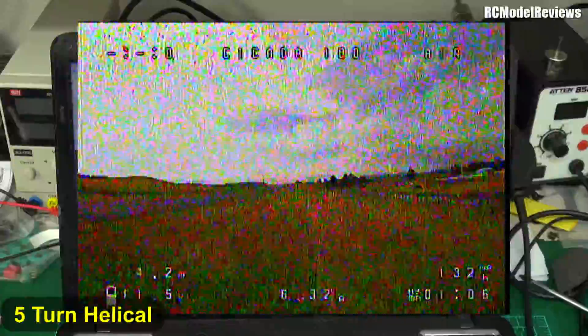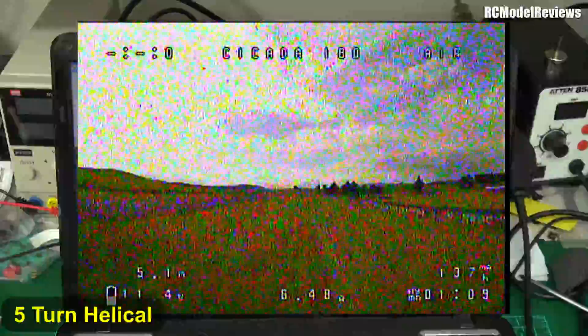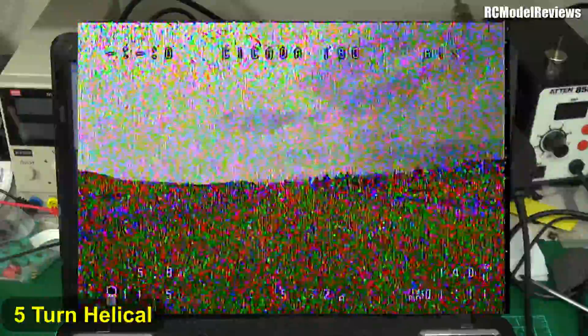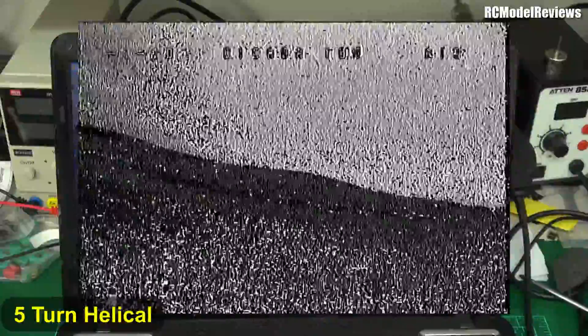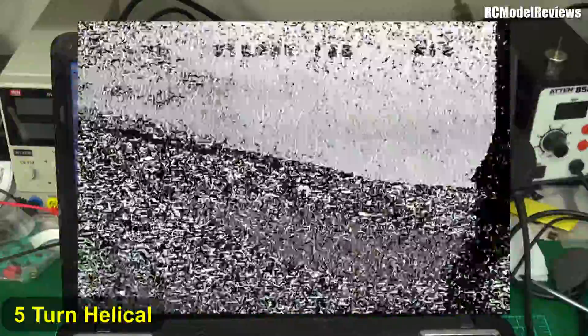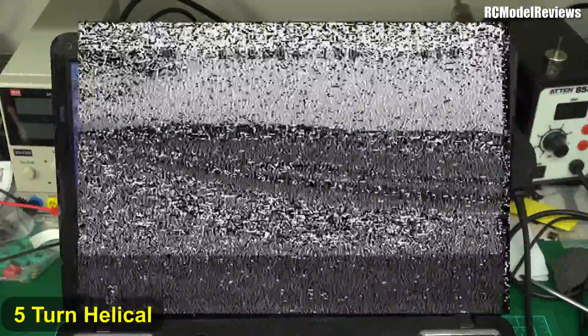Of course being directional we will get a loss of signal as we travel behind the antenna, but it's much better than the seven turn. We've got a lot more signal behind. The seven turn really was looking all out the front. We've lost signal out front but we've gained a little bit in the back, but it gets pretty unflyable as we move off to the side here.